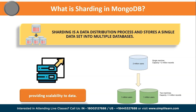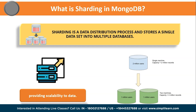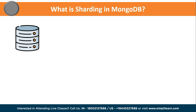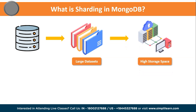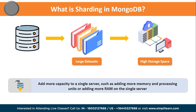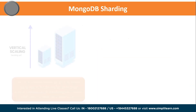Sharding distributes the process and stores a single dataset across multiple databases. The purpose of any database distribution is to enhance the scalability of applications. Sharding keeps data safe across different resources by breaking down big datasets into simple subdivided datasets across multiple instances. A single database cannot handle large data sets efficiently, as bulk query operations can use most of the CPU cycles, slowing down processing. One approach is to add more capacity to a single server — adding more memory, processing units, or RAM — which is known as scaling.